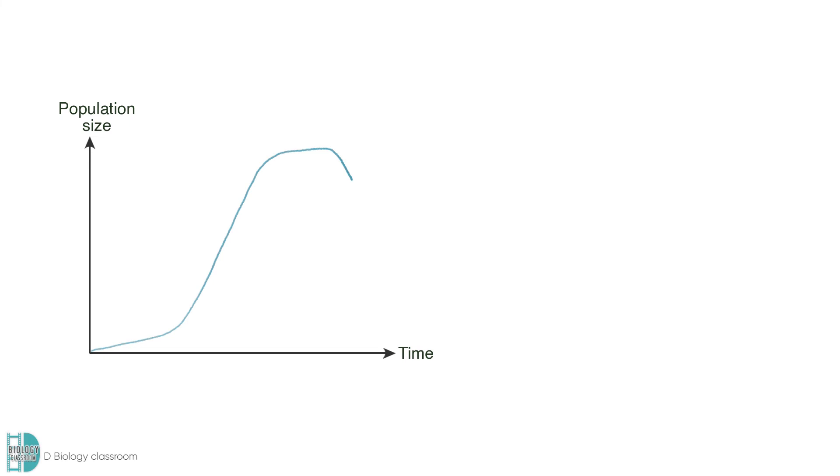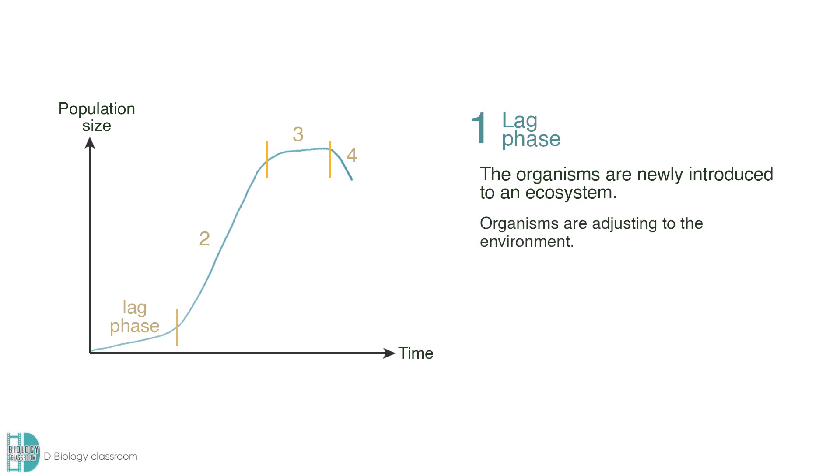We can separate the graph into four phases. The population size increases slowly at first. This is called the lag phase. This is the phase when the organisms are newly introduced to an ecosystem. They need time to adjust to the environment. It is also due to their small number, so there is a very slow increase.